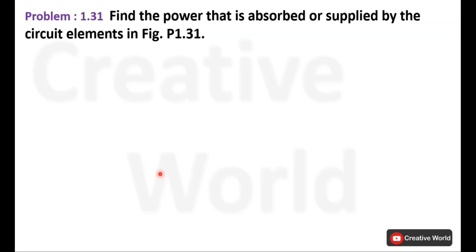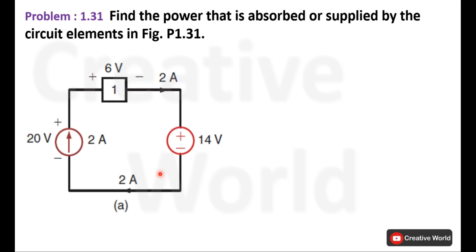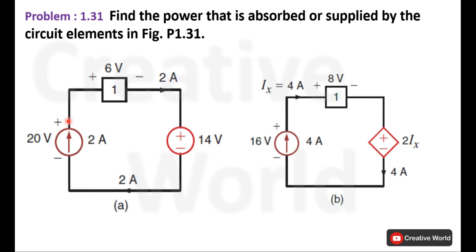First, read the scenario: find the power that is absorbed or supplied by each element in circuit figure 1.31. These two circuits are given in figure 1.31 and we have to calculate the power of individual elements in these circuits. Without wasting time, let's proceed towards the solution.